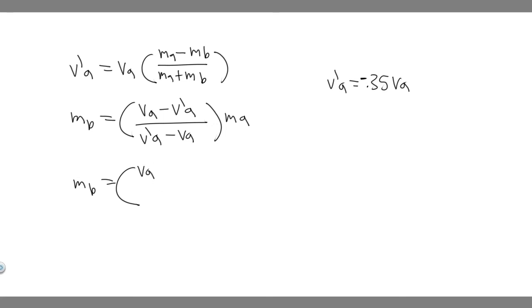Just plugging this in, you're going to get va minus v prime a, which we know is minus 0.35 va. Then we're going to divide that by v prime a, which is minus 0.35 va plus vb, and then multiply it by ma. What you want to notice, though, is that they tell us the second ball is at rest, so the velocity of this is just 0.